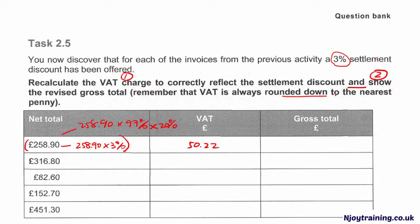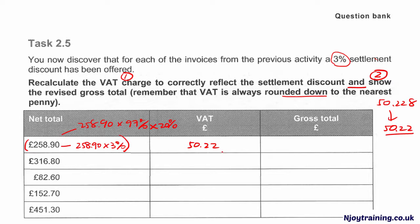Remind ourselves: this rounds down to the nearest penny. So when it says round it down, if you've got a figure of 50.228, you round it down — that gives you 50.22. You don't round it up, you round it down. So that's 50.22. This figure needs to be added back to the initial net amount to get to the new gross amount, which is 309.12.